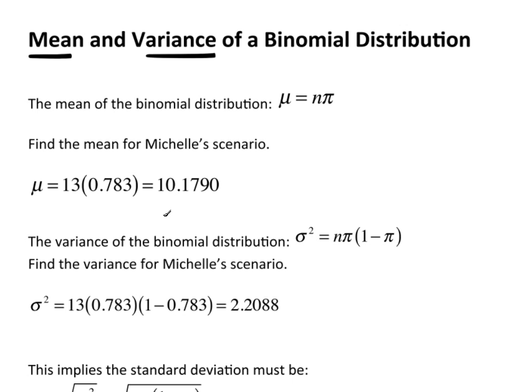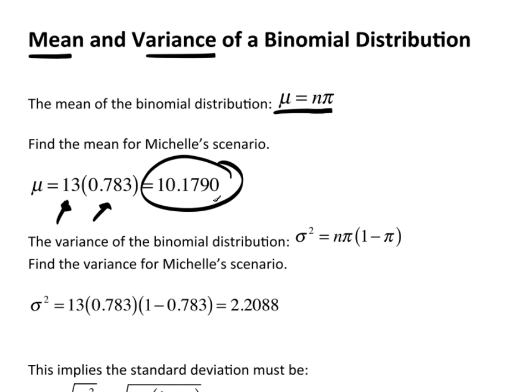The mean of the binomial distribution is simply mu equals n times pi. For this Michelle scenario with the basketball, n was 13 and pi was 0.783, so the mean — what we'd expect — is 10.1790. That means if Michelle went to the free throw line right now and took 13 shots, our best guess is that she would hit 10.1790.